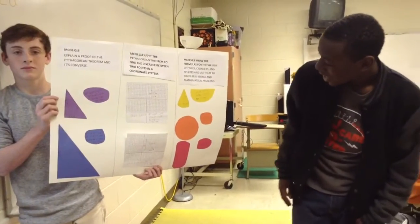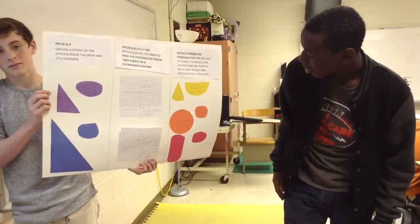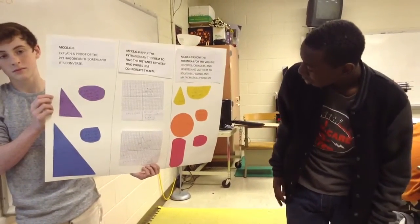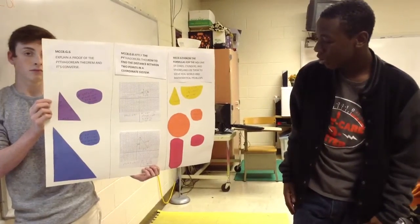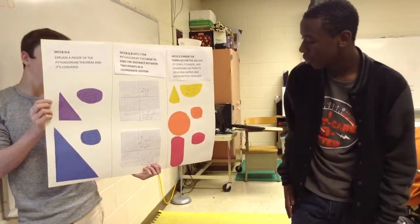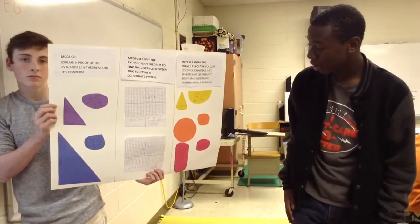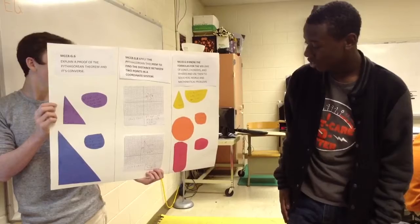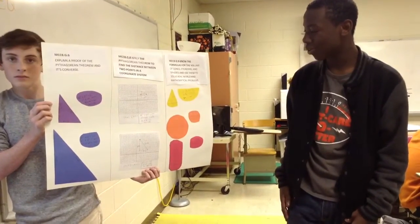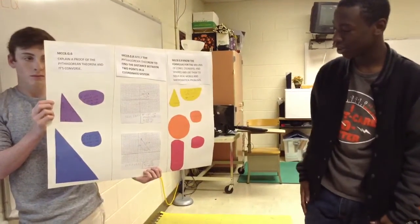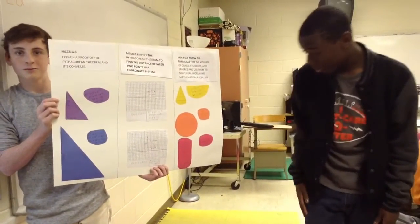The volume of a cone equals 1/3 times pi times radius squared times height. So 1/3 times 3.14 times 2 squared times 8 equals 33.49 cubic inches. And for the sphere,